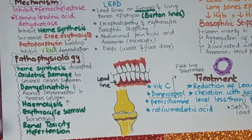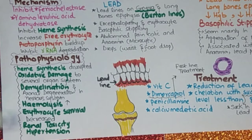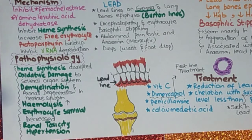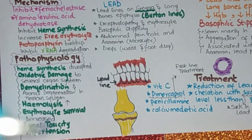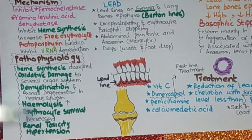What is the pathophysiology? Lead disrupts heme synthesis, causes oxidative damage to several organ systems of the body, demyelination and axonal degeneration in the nervous system, hemolysis — destruction or lysis of RBC — erythrocyte survival and their normal lifespan of 120 days is decreased, and renal toxicity because of blood overload and hypertension.